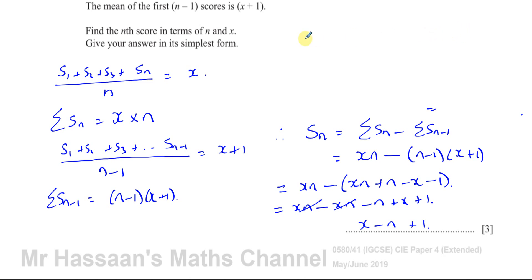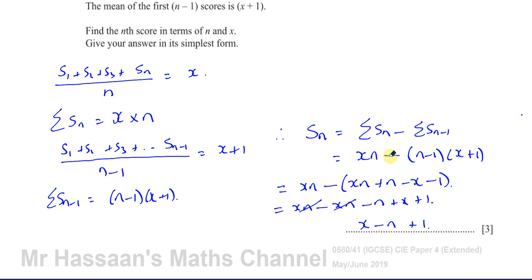If you have the sum of the first 10 scores and the sum of the first 9 scores, the 10th score is what you need to add to the sum of the first 9 scores to give you the sum of the first 10 scores. The same thing applies here — what you add to the sum of the first n minus 1 scores to get the sum of the first n scores is the nth score. So that's the answer.